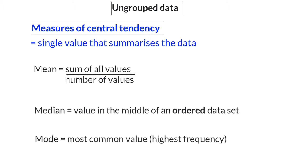The mean is calculated by getting the sum of all the values and dividing that by the number of values — that is simply your average. The median is the value exactly in the middle of a data set; it is important to remember that the set should already be ordered in increasing or decreasing values. The mode is the most common value, meaning it is the value with the highest frequency.